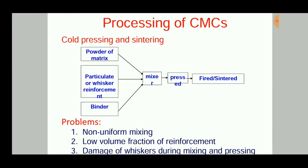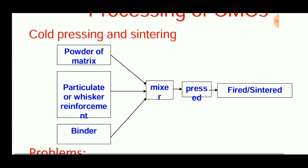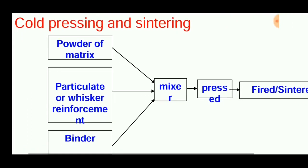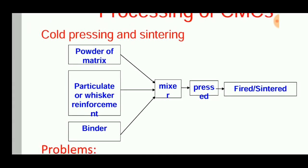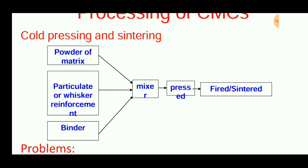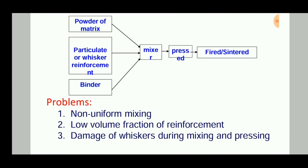Cold pressing and sintering is a method which involves the pressing of the mixed reinforcement and binder, and then firing. This chart denotes the powder mixture of particle or whisker reinforcement and binder mixed together and pressed using a hydraulic press or other machines, and then fired — that is the sintering — so that we can get a near-net-shape product.